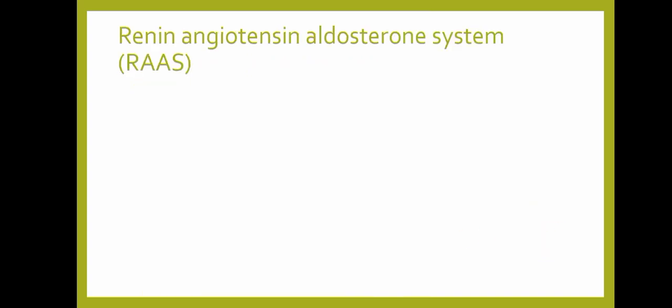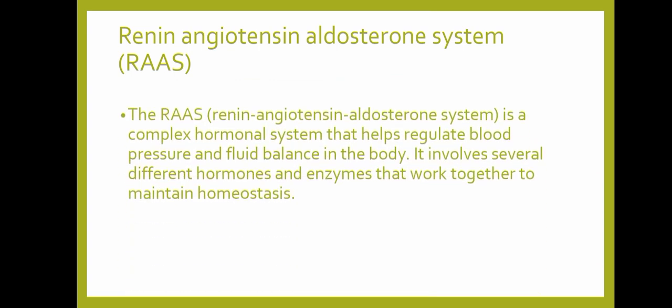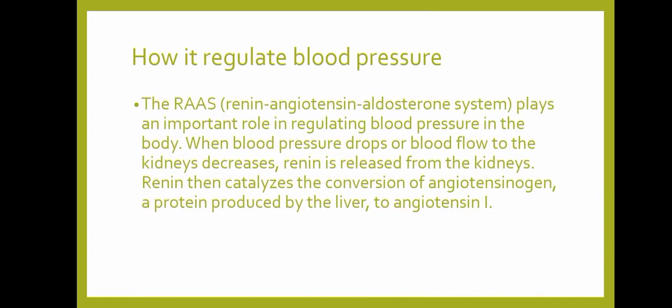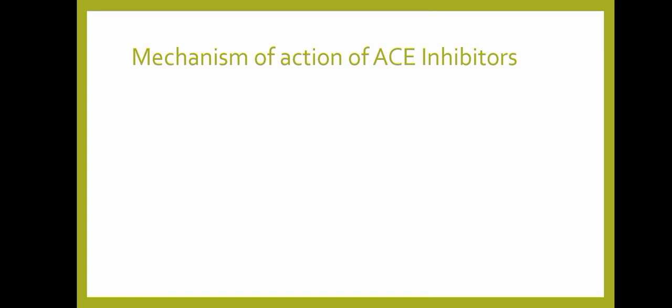This leads to a decrease in blood pressure and an improvement in blood flow to the heart and other organs. The renin-angiotensin-aldosterone system is a complex hormonal system that helps regulate blood pressure and fluid balance in the body, involving several hormones and enzymes that work together to maintain homeostasis. When blood pressure drops or blood flow to the kidneys decreases, renin is released from the kidneys and catalyzes the conversion of angiotensinogen, a protein produced by the liver, to angiotensin 1.